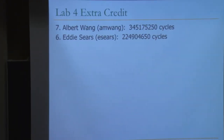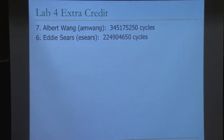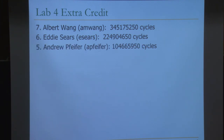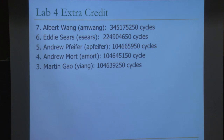Number 7 is Albert Wang. Number 6 is Eddie. There's a big difference between Albert and Eddie's cycle count. This is on Justin's prime test — it's a long test, so it takes 345 million cycles. A real workload can be much, much longer than hundreds of millions of cycles. So you can now imagine the design trade-offs you can make by executing some number of instructions. That's why we go to high-level simulation. The top five are actually very close to each other: Andrew Pfeiffer, Andrew Mort, Martin Gao, and Gan Charmini.